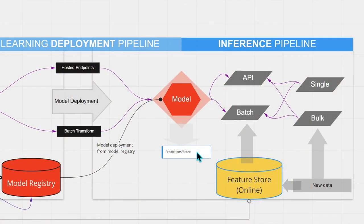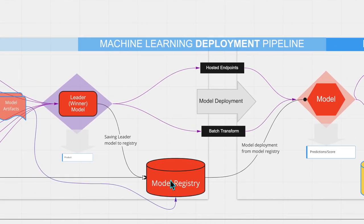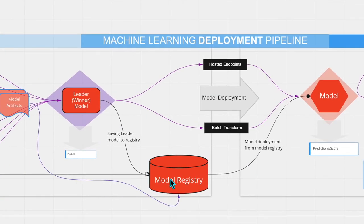As technology improves and new advanced capabilities are added into the machine learning pipeline, some new features are also introduced — specifically the feature store in online and offline modes, along with the model registry. Let's take a look at how everything plays together.